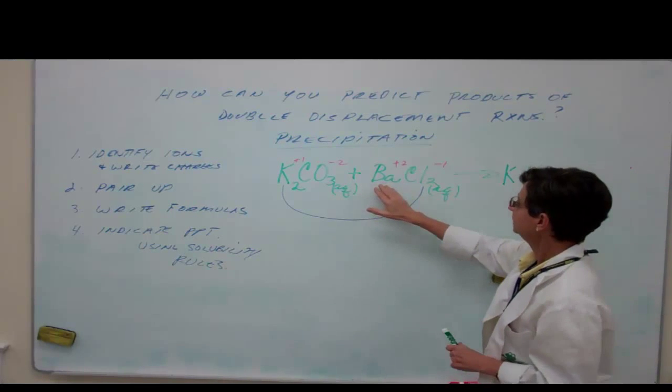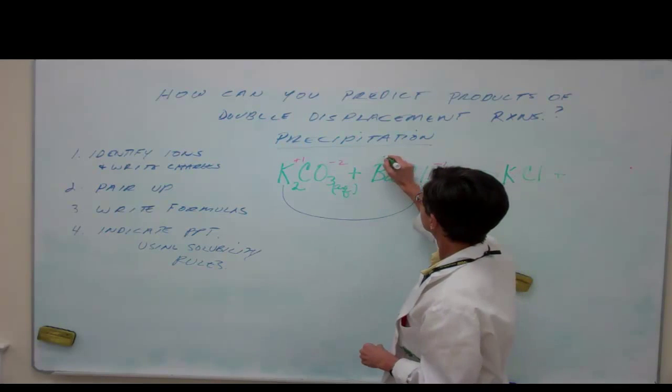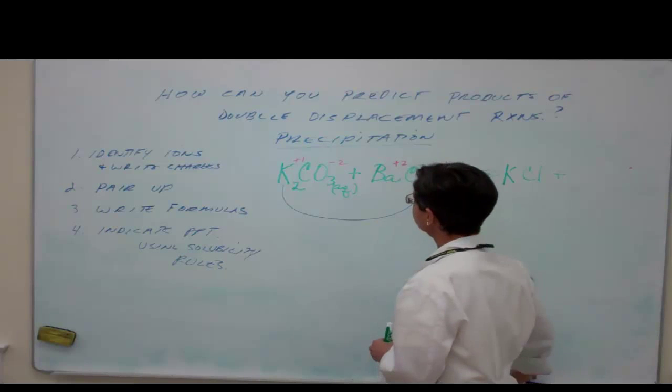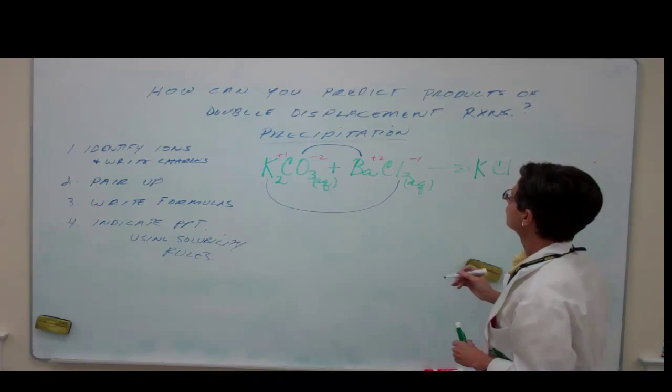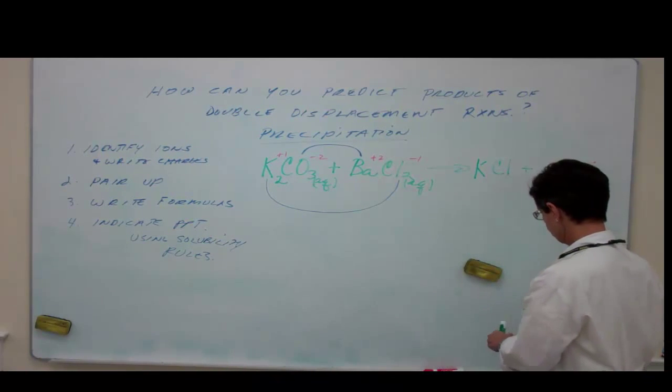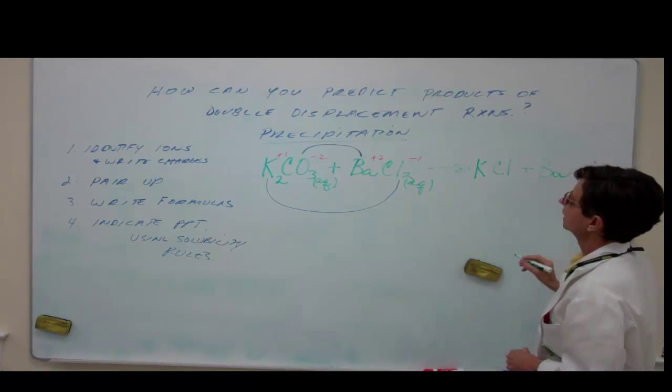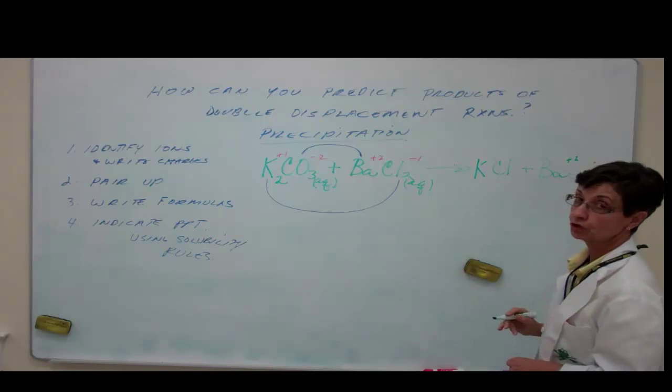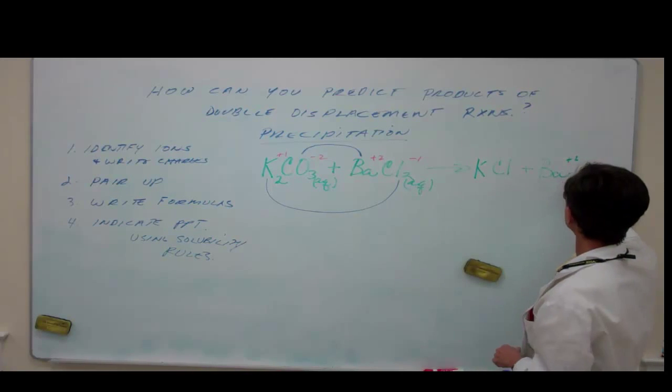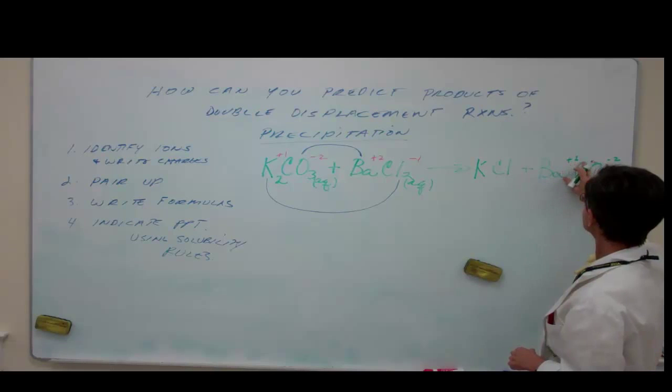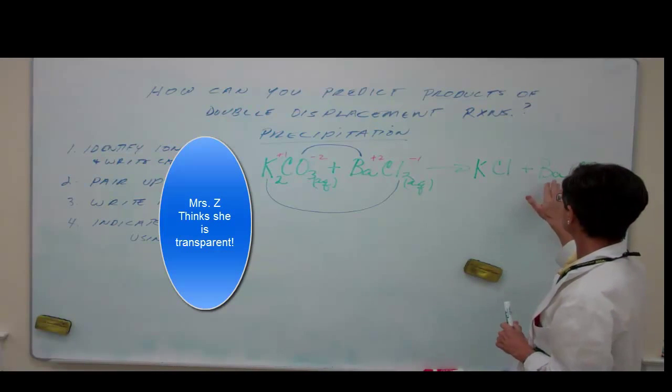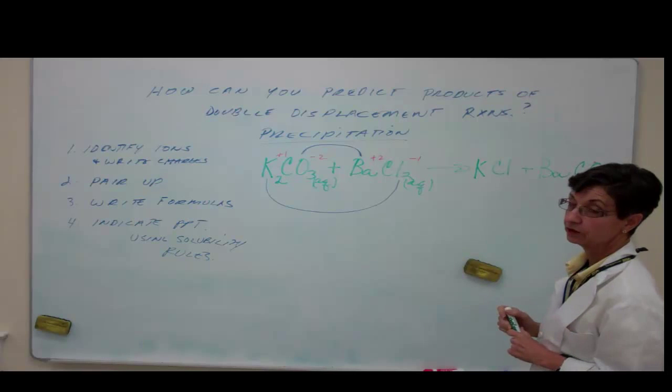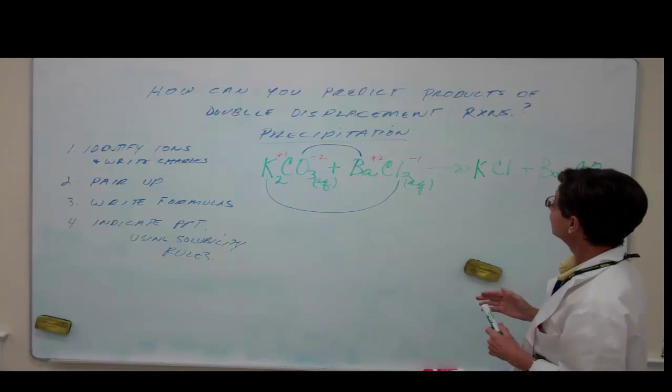I'm going to combine my positive ion of this side with the negative ion or the negative polyatomic ion of the other compound. So positive first, BA, and I'm going to carry the plus two charge over, and then I'm going to take the carbonate CO3 negative 2. Positive 2 negative 2 they cancel out, so therefore I don't have to worry about that anymore. It is a correct formula.